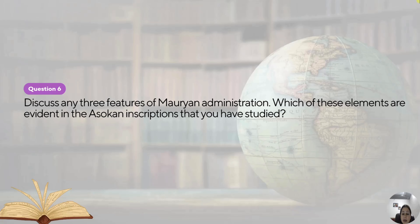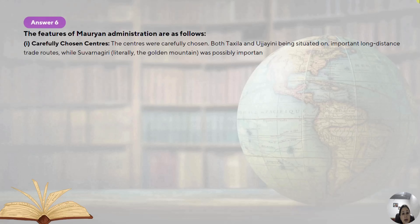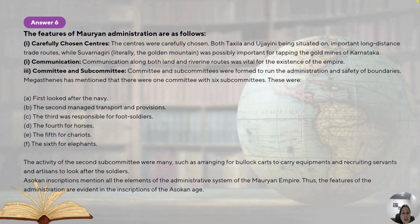Question number six: discuss any three features of Mauryan administration. The Mauryan Empire was very huge, expanding across almost the entire northern part of the Indian subcontinent. In order to rule such a huge territory, five provincial centers were chosen. Centers were carefully chosen — both Takshashila and Ujjain being situated on important long-distance trade routes. Then Suvarnagiri, literally 'the golden mountain,' was important for tapping the gold mines of Karnataka, and Pataliputra was the capital.